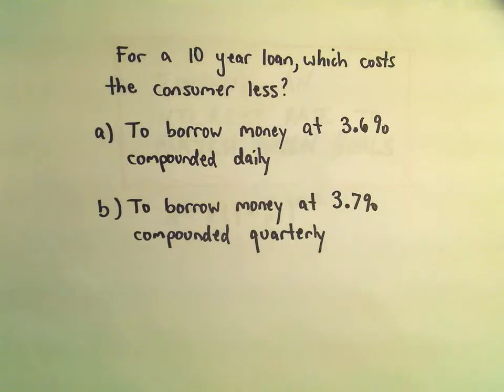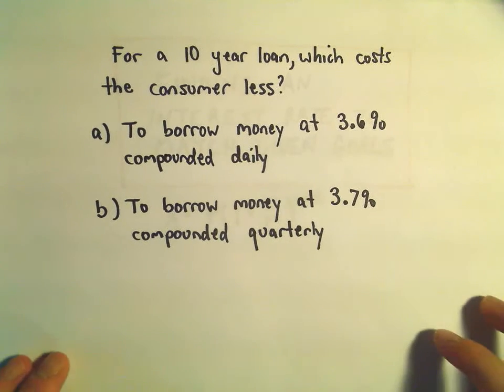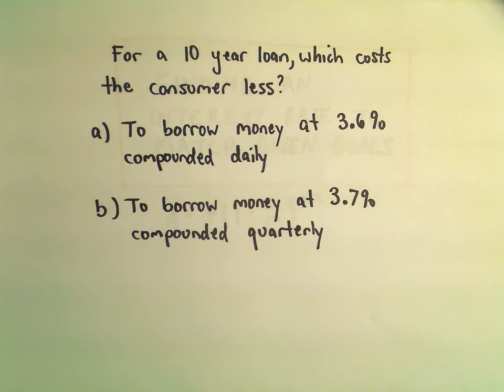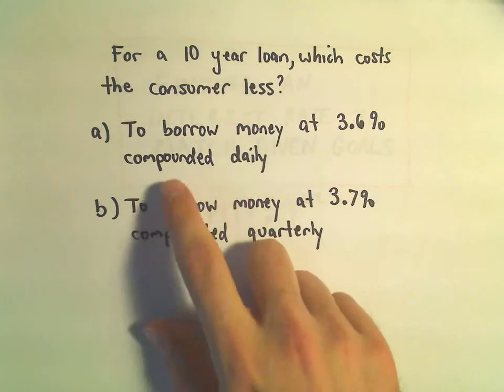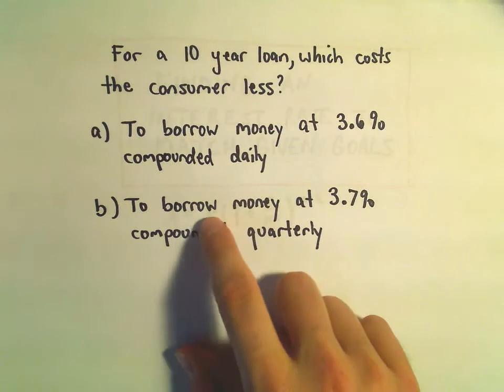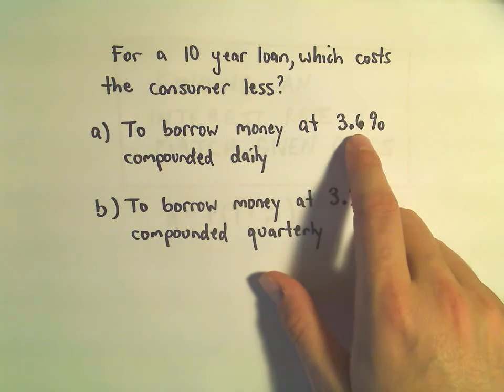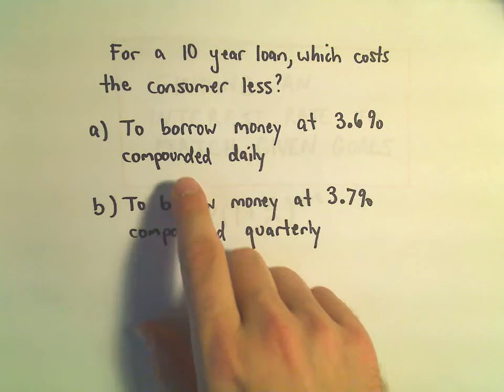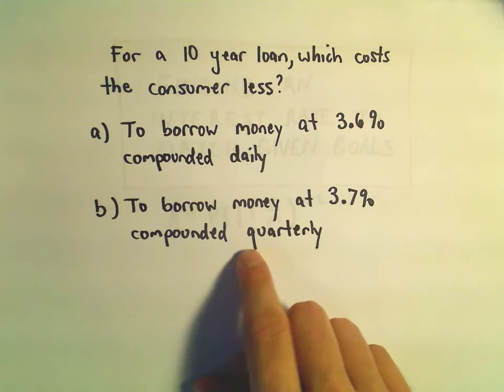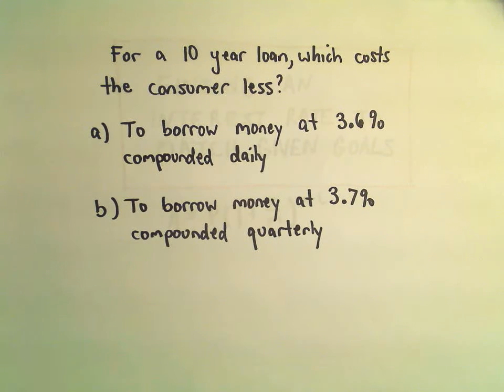All right, in this video I want to talk about a pretty real-life example. So suppose you've got a 10-year loan that you're going to take out, and you've got two options. You can either borrow money at 3.6% that's compounded daily, or you can borrow money at 3.7% but it's compounded quarterly. So you've got a lower interest rate compounded more often versus a higher interest rate compounded less frequently.